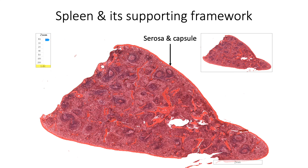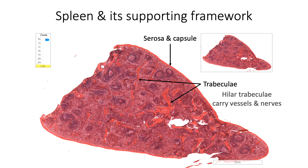Beneath the peritoneal lining, spleen is covered by a thick capsule made up of type 1 collagen fibers and elastin fibers. Numerous trabeculae extend from the capsule. The largest trabeculae enter from the hilum and carry the blood vessels and nerves. Within the spleen, there is a delicate network of type 3 collagen fibers, or the reticular fibers.